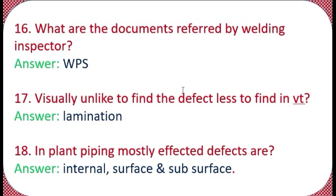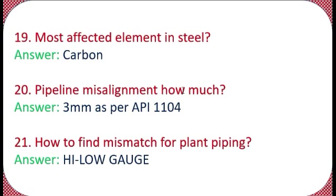Question 18: In plant piping, what are the most commonly affected defects? The answer is internal surface and subsurface defects. Question 19: What is the most affected element in steel? The answer is carbon. Question 20: What is the pipeline misalignment acceptance limit as per API 1104? The answer is 3 mm.